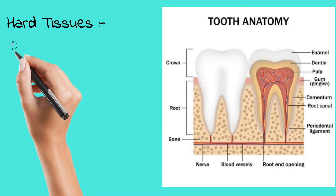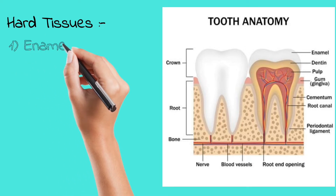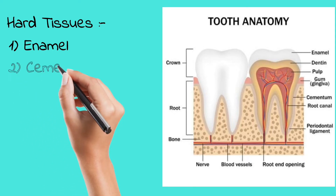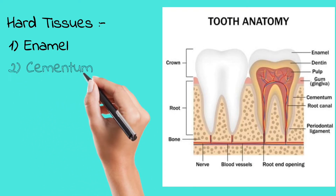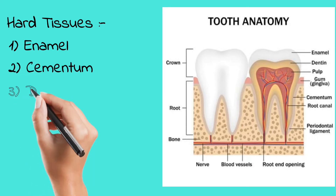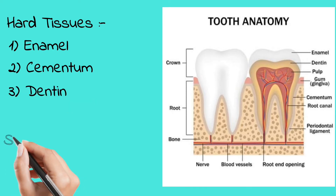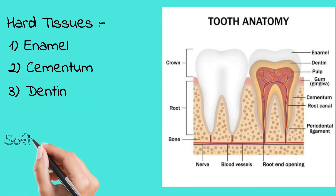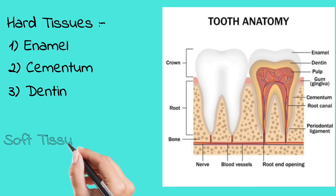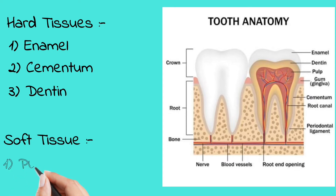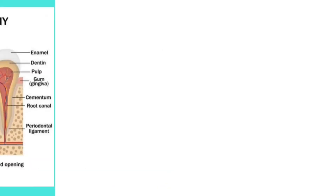Let us understand the different parts of a tooth. The part which is above the gingiva is called the crown, and which is below the gingiva is called the root. There are hard tissues: enamel, cementum, and dentine. Enamel is the outer covering in the crown portion, cementum is in the root portion, and dentine is within the enamel.